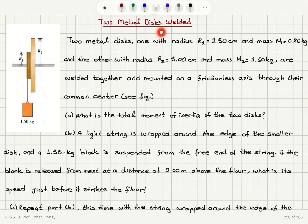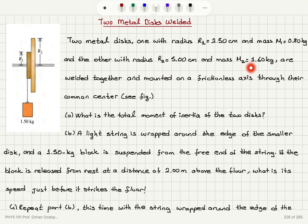Two metal discs: one with radius R1 equals 2.5 cm and mass M1 equals 0.8 kg, and the other with radius R2 equals 5 cm and mass M2 equals 1.6 kg, are welded together and mounted on a frictionless axis through their common center.